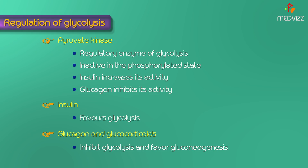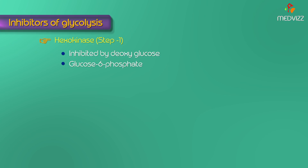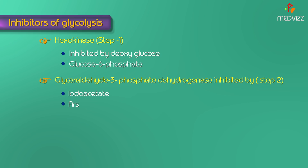The inhibitors of glycolysis: step 1, hexokinase, is inhibited by deoxyglucose and also subject to product inhibition — when glucose 6-phosphate accumulates it inhibits hexokinase, but this product inhibition is not seen with glucokinase. Molecules like iodoacetate, arsenate, and heavy metals like mercury and silver can also inhibit glycolysis. Importantly, step 8 — enolase — is inhibited by fluoride.